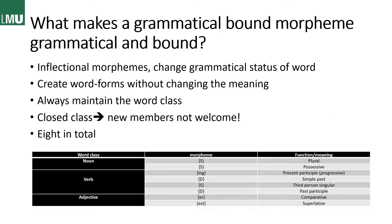And finally, we have grammatical bound morphemes. There are exactly eight of them, which you can see in the table. These are inflectional morphemes — they change the grammatical status of a word. For example, if you take the plural -s, you transfer 'boy' to 'boys.' What you basically do is say there's more than one boy — you don't change the meaning but rather create a new word form. And you always maintain the word class. These are highly closed class: there are these eight morphemes and no new members.